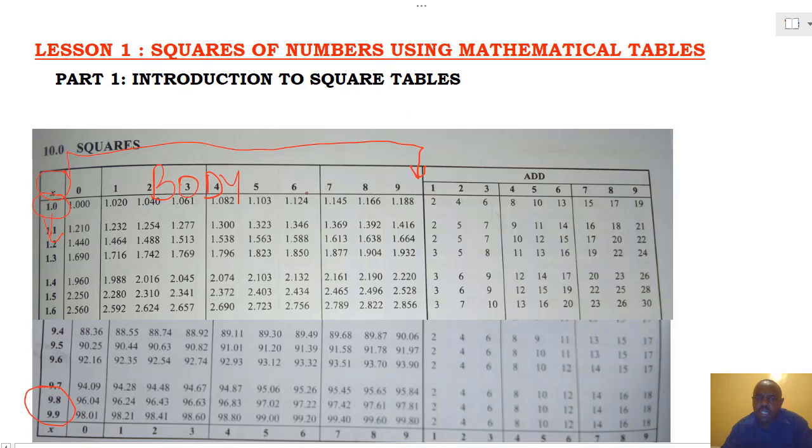After that, we have the fourth decimal places. And the fourth decimal place can either be 1, 2, 3, 4, 5, all the way up to 9.